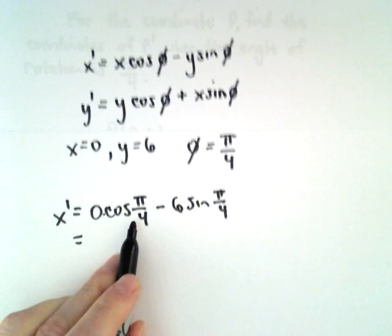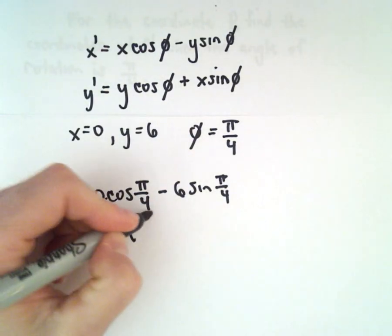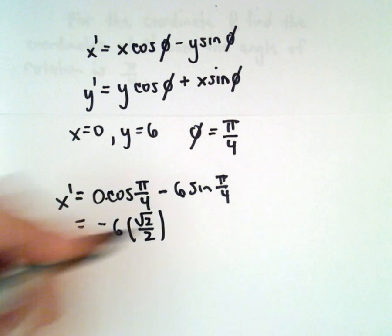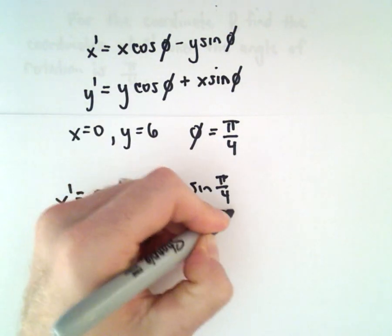Well, the first term is just going to be 0. Sine of pi over 4 is the square root of 2 over 2, and that'll give negative 3 times the square root of 2.